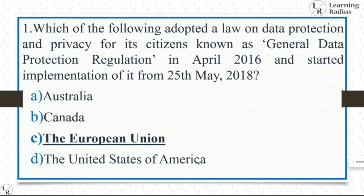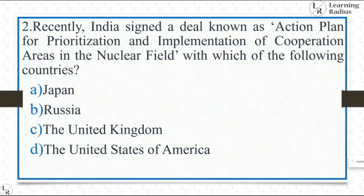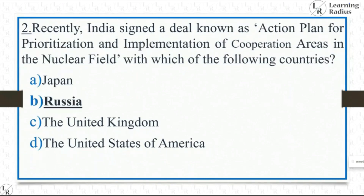Recently, India signed a deal known as the Action Plan for Prioritization and Implementation of Cooperation Areas in the Nuclear Field with which of the following countries? Options: Japan, Russia, United Kingdom, or United States of America. The answer is option B — Russia.